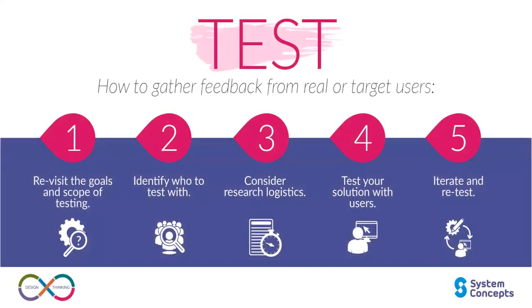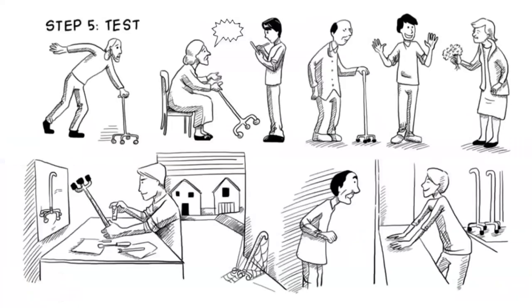The fifth stage is testing — gathering feedback and iterating. With prototypes in hand, go back to the users and gather feedback. Watch how they interact with your designs and listen to their thoughts and reactions. Learn from their feedback, identify what works and what doesn't, and use these insights to refine and improve your solutions. Iterate through the design process as many times as needed until you arrive at a developed and user-approved solution.